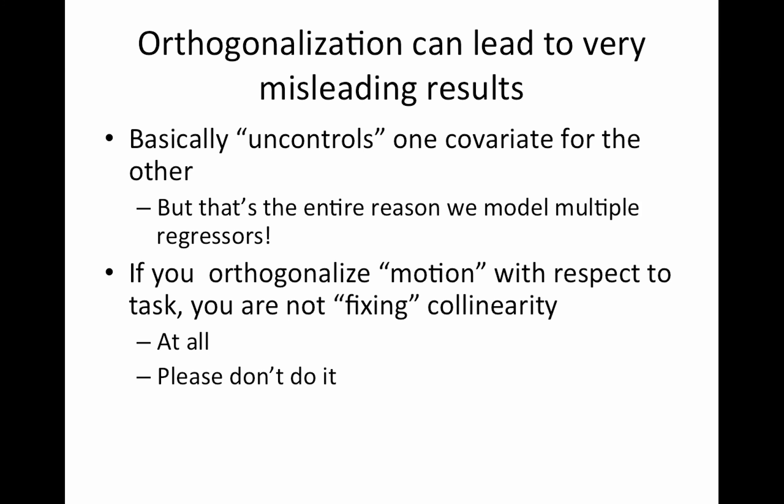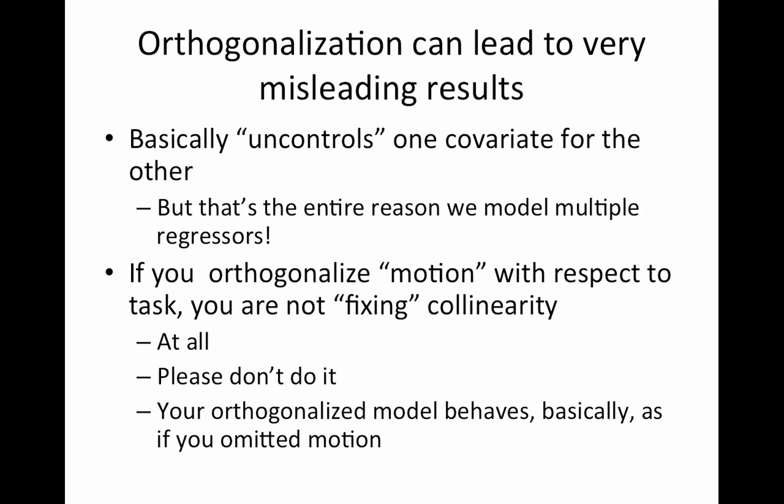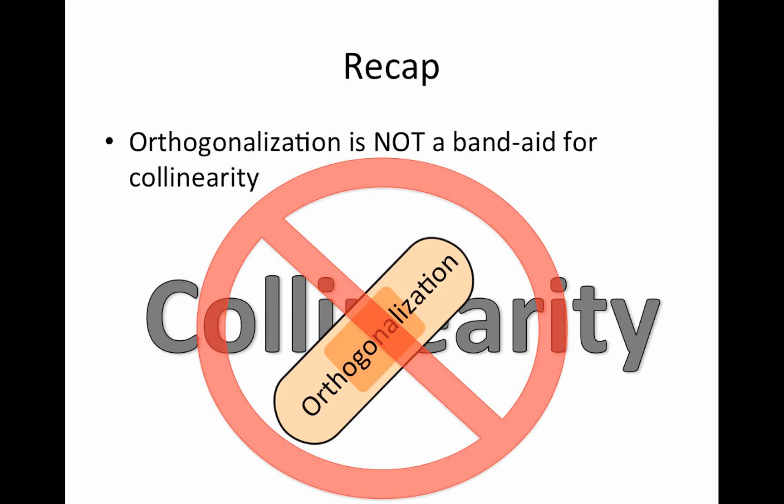Orthogonalization can lead to very misleading results. It basically uncontrolls one covariate for the other - previously it was controlled, now it's uncontrolled. That's the entire reason we model multiple regressors. If you orthogonalize motion with respect to task, you're not fixing collinearity - you're just producing misleading results. Your orthogonalized model behaves basically as if you omitted motion. Orthogonalization is not a band-aid for collinearity. Please don't do it.